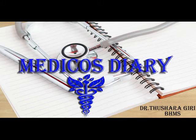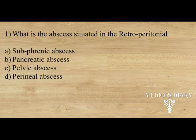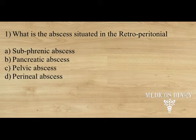First one: What is the abscess situated in the retroperitoneal? Options: A) Subphrenic abscess, B) Pancreatic abscess, C) Pelvic abscess, D) Perineal abscess.